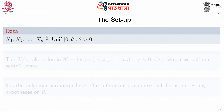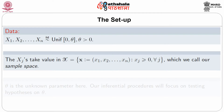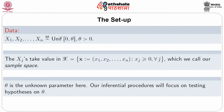Take a random sample of size n from a Uniform(0, θ) population where θ > 0. So X₁, X₂, ..., Xₙ are i.i.d. Uniform(0, θ). The sample space is where X₁ ≥ 0, X₂ ≥ 0, ..., Xₙ ≥ 0. Theta is the unknown parameter and our inferential procedures will focus on testing different hypotheses on θ.